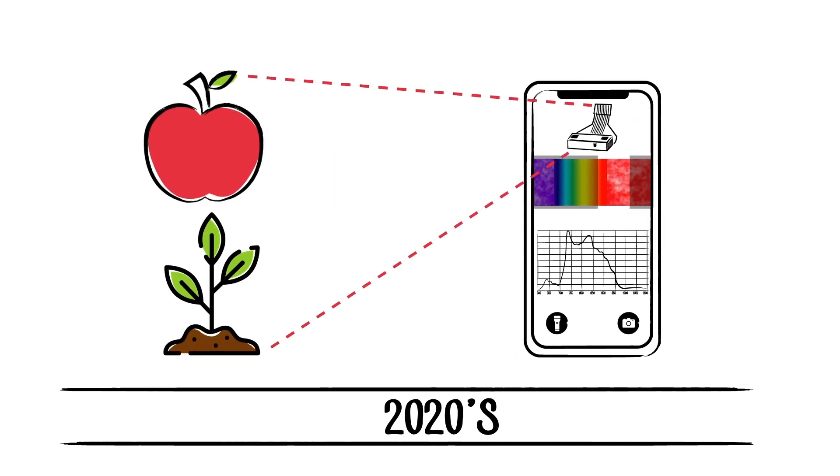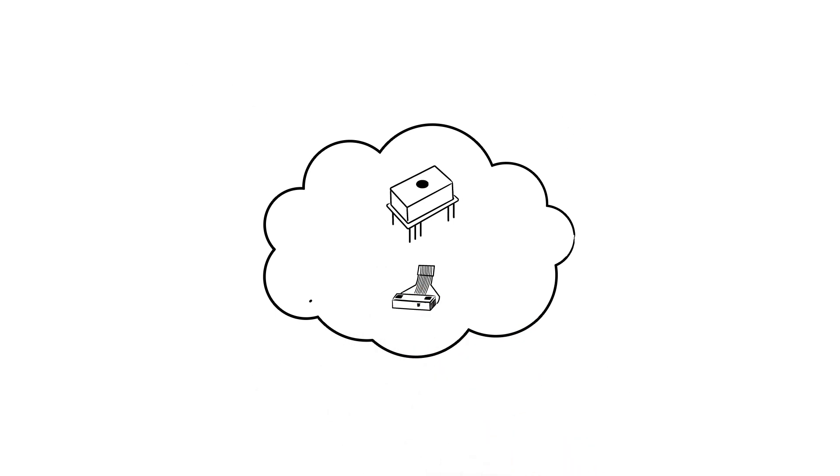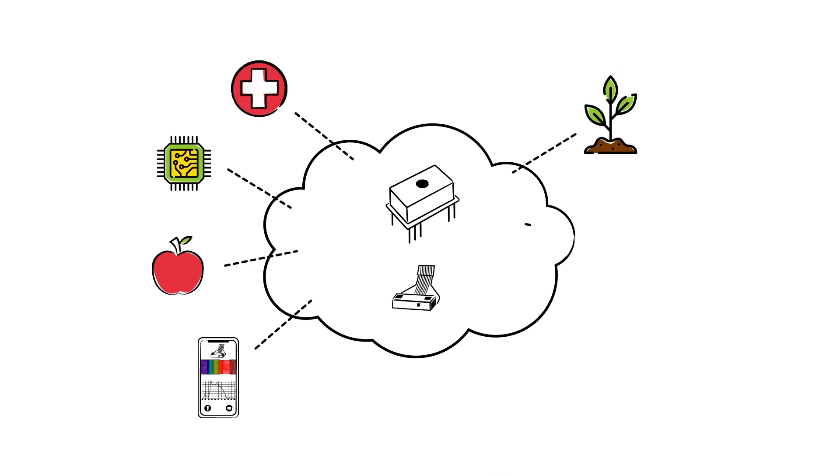We've shared just a few examples today of where and how these compact spectrometers can be used. The size and reliability of these devices opened opportunities for pocket spectrometers, crop ripeness, fat measurement, point of care, and soil analysis, but there are a plethora of many more applications to explore.